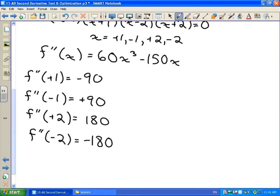And then we're just going to use this to figure out whether these are local max or local min. So if we look at where x is positive 1, our second derivative here is negative. So this is going to be a local max. Where this thing is positive, we're going to have a local min.